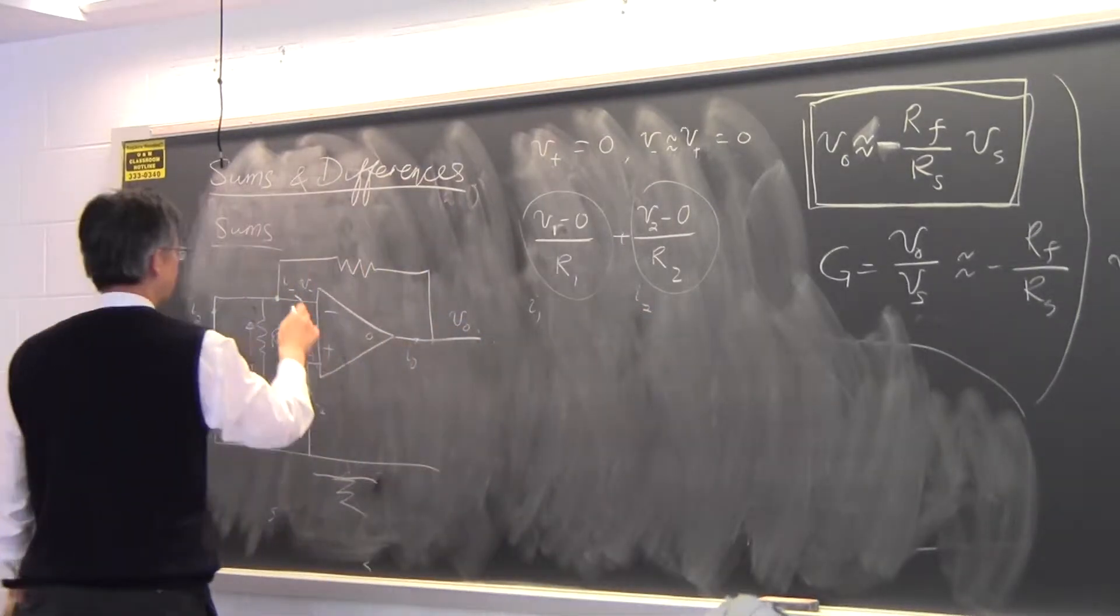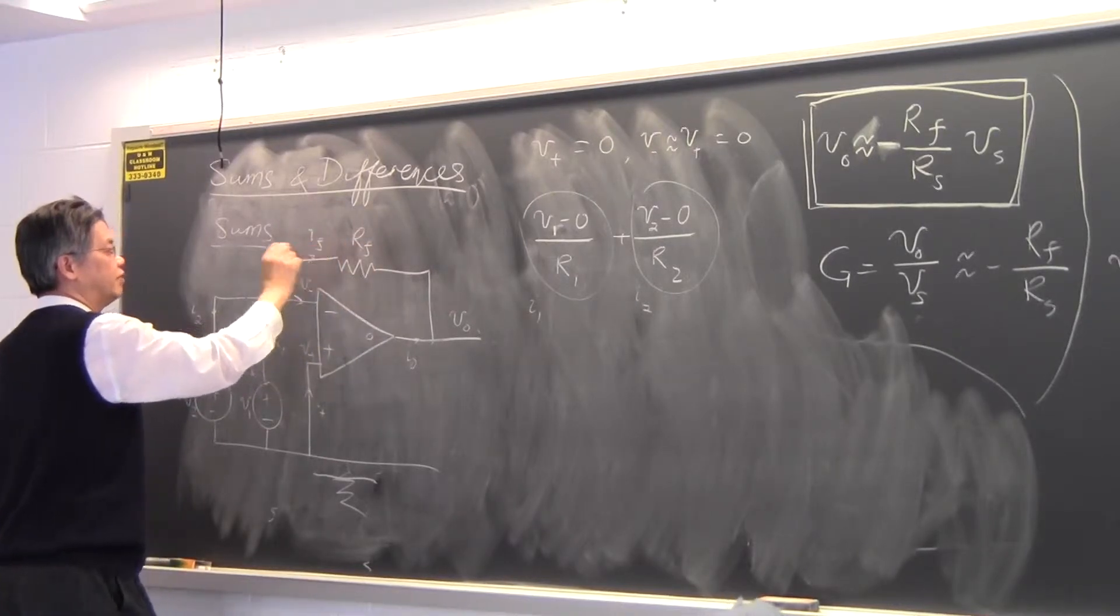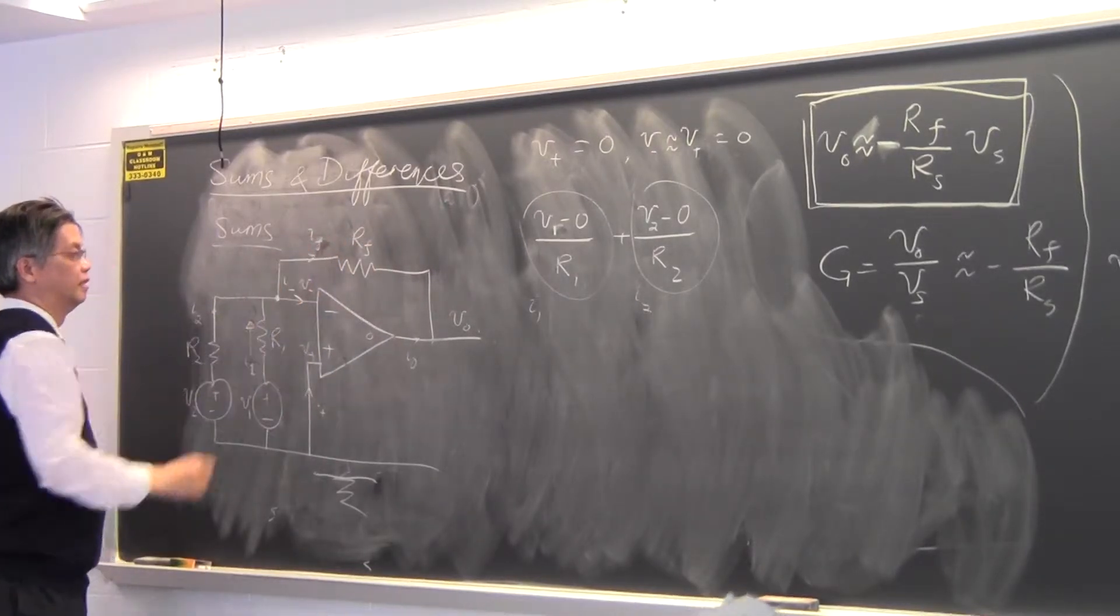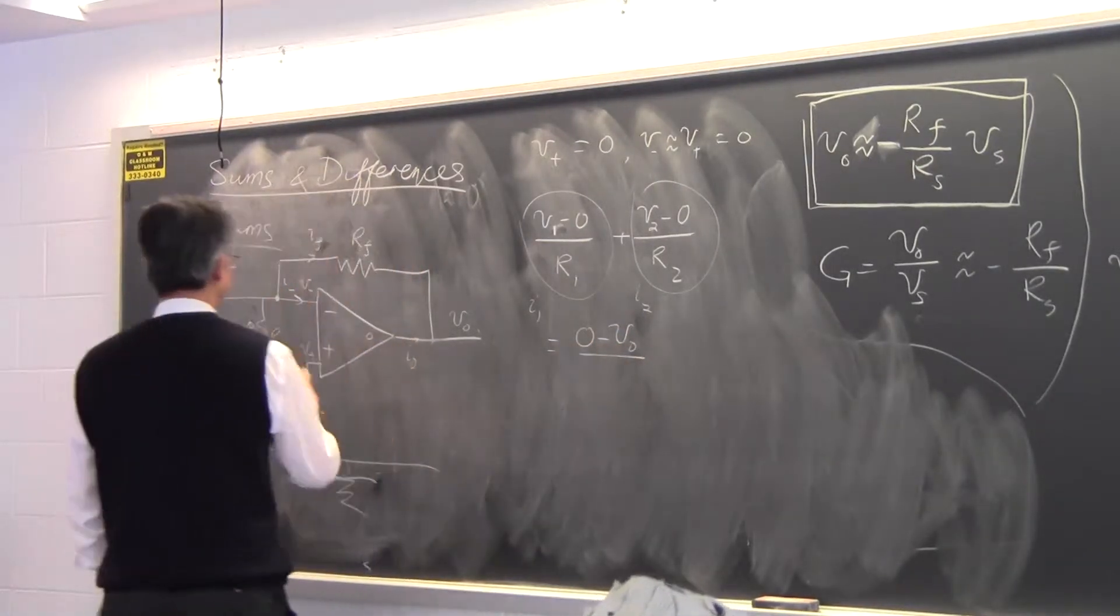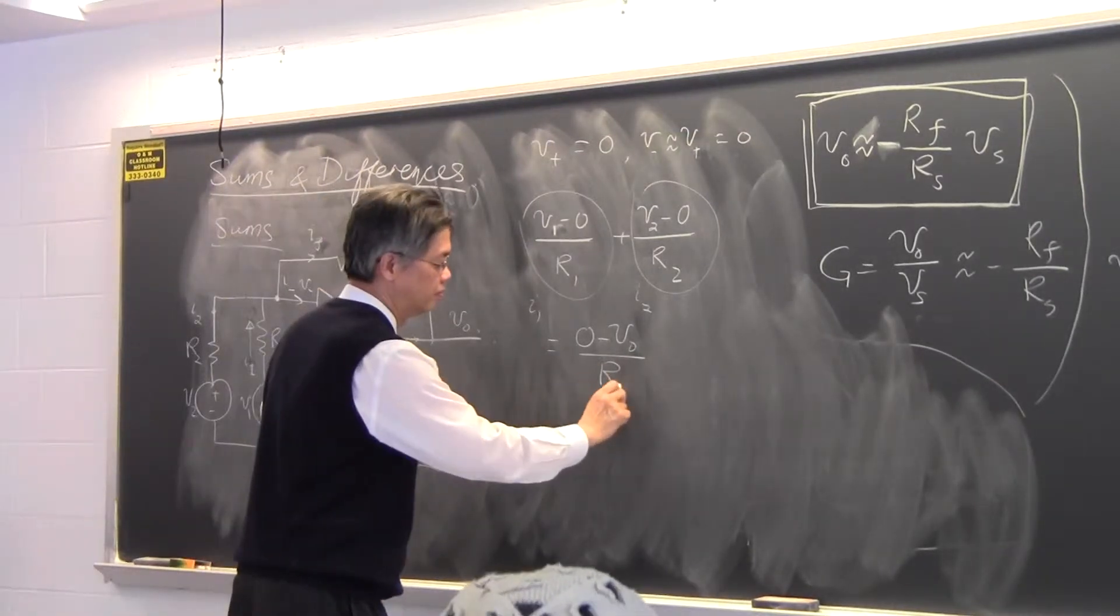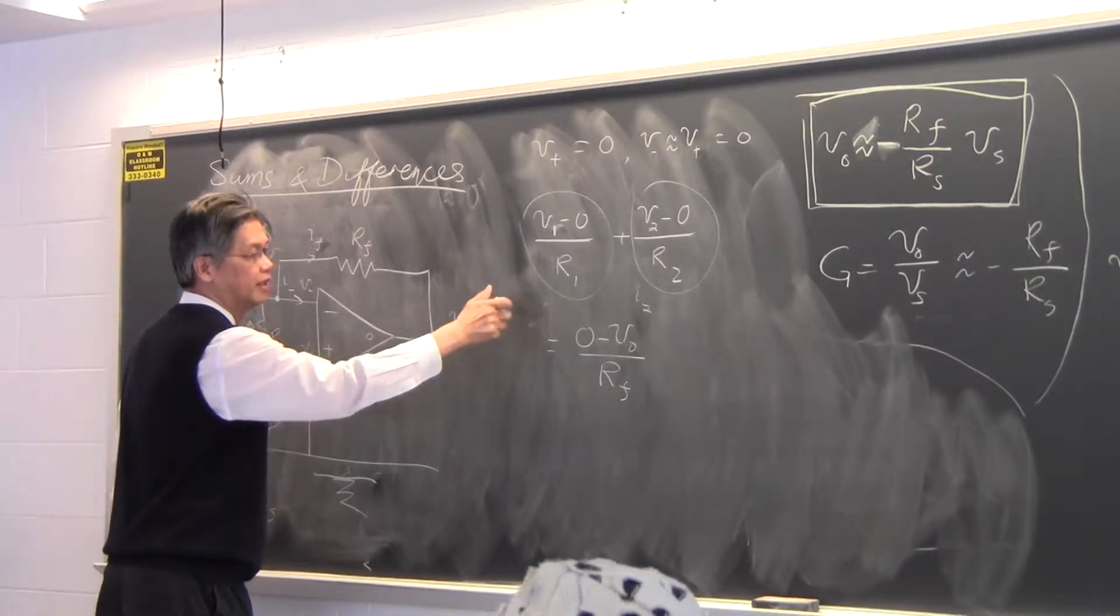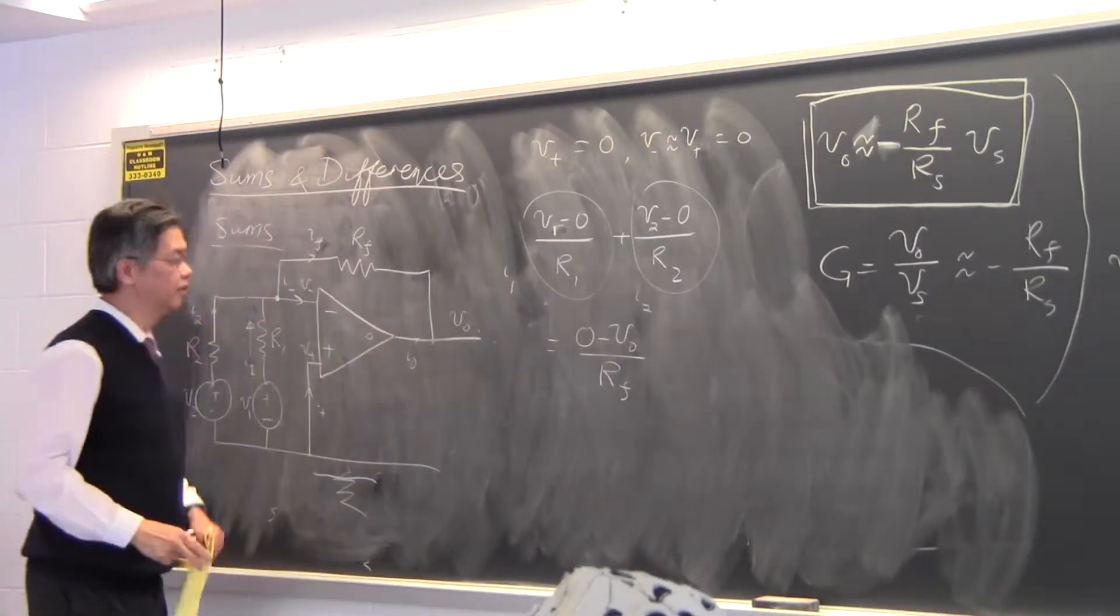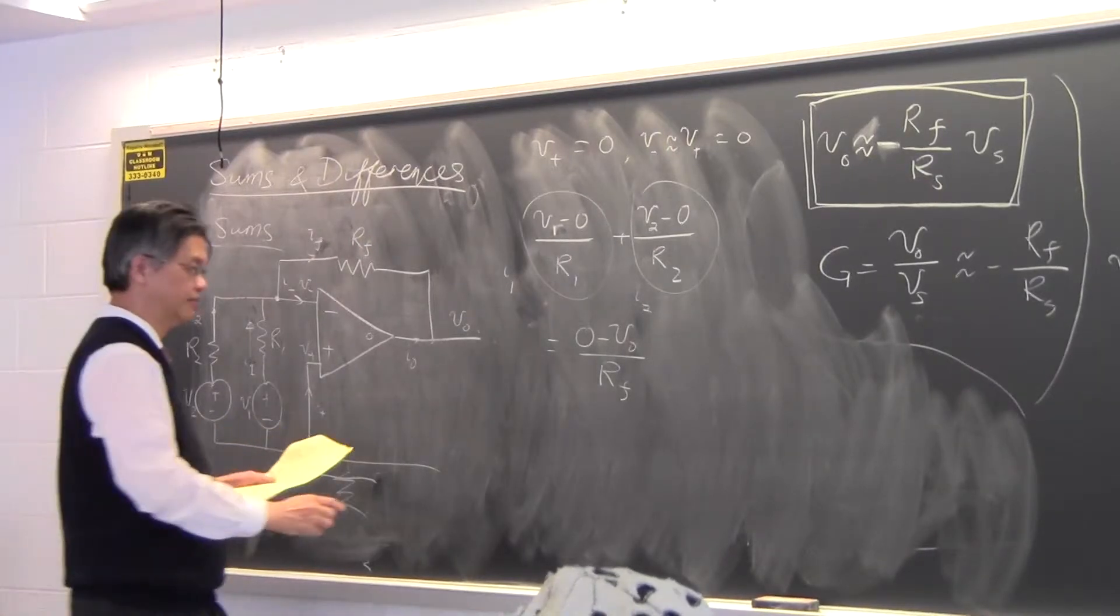And then I have to figure out what this current is, maybe this is RF. I_F would be equal to zero minus V0, this thing being almost grounded, divided by RF. So this is Kirchhoff's current law at this node over there. And you can solve for V0 very easily.